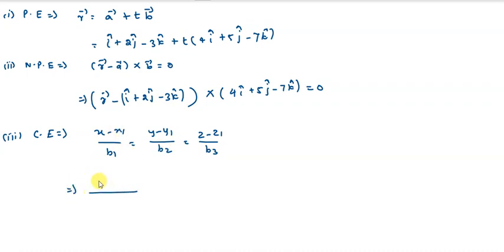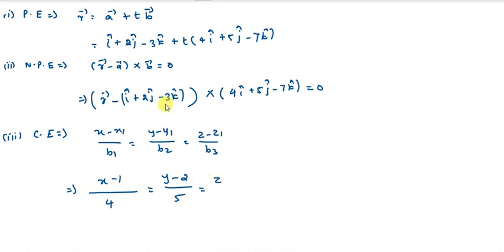Substituting the values: (x - 1)/4 = (y - 2)/5 = (z - (-3))/(-7), which simplifies to (x - 1)/4 = (y - 2)/5 = (z + 3)/(-7). This is the required Cartesian equation. Thank you students for watching this video.